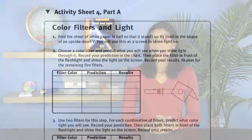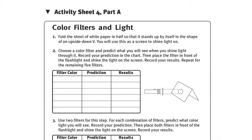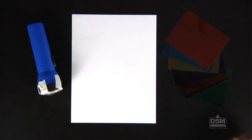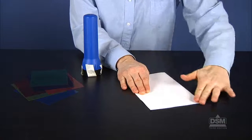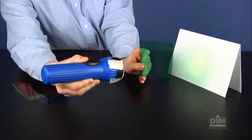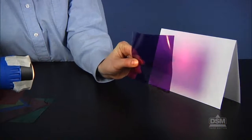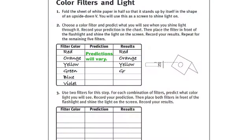Next, divide the class into teams of two. Distribute a copy of Activity Sheet 4 Parts A and B to each student and the materials to each team. Demonstrate how to fold the sheet of white paper in half so that it can set up as a paper screen and how to position the flashlight and filters. Have students predict what will happen when the white light from their flashlights shines through each individual color filter. Then darken the room. Instruct students to experiment with each of the six filters and to complete the chart at the top of their activity sheets.